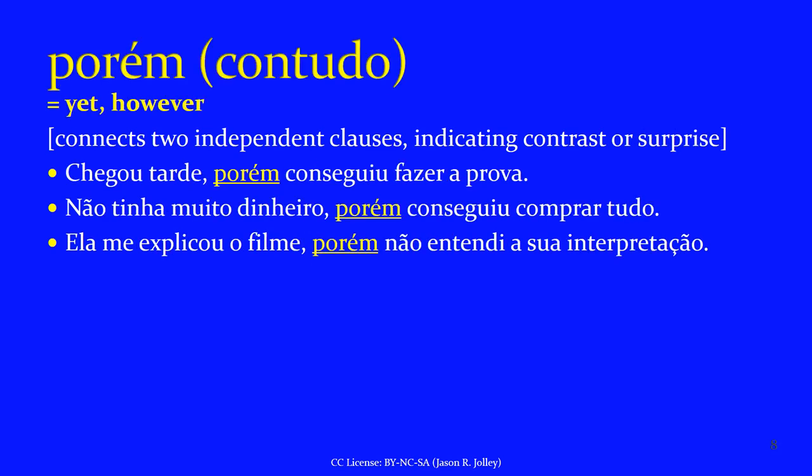Another coordinating conjunction is PORÉM, which means 'yet' or 'however.' It connects two independent clauses. 'Chegou tarde, porém conseguiu fazer a prova' — he/she arrived late, yet was able to take the test. 'Não tinha muito dinheiro, porém conseguiu comprar tudo' — he didn't have a lot of money, yet he was able to buy everything. 'Ela me explicou o filme, porém não entendia sua interpretação' — she explained the film to me, however I didn't understand her interpretation. PORÉM is fairly common and means 'yet.'